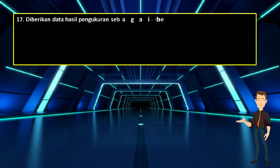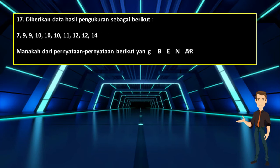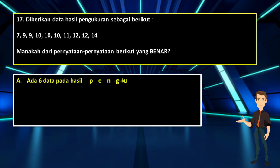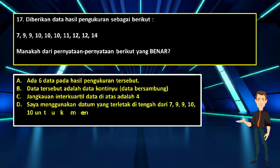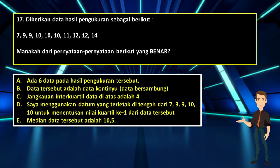Nomor 17. Diberikan data hasil pengukuran: 7, 9, 9, 10, 10, 10, 10, 11, 12, 12, 14. Manakah pernyataan berikut yang benar? A. Ada 6 data pada hasil pengukuran tersebut; B. Data tersebut adalah data kontinu; C. Jangkauan interkuartil; D. Menggunakan datum yang terletak di tengah dari 7, 9, 9, 10, 10, 10 untuk menentukan nilai kuartil ke-1; E. Median data tersebut adalah 10,5. Jawabannya adalah D: menggunakan datum yang terletak di tengah dari 7, 9, 10, 10, 10, 10, 12 untuk menentukan nilai kuartil ke-1.